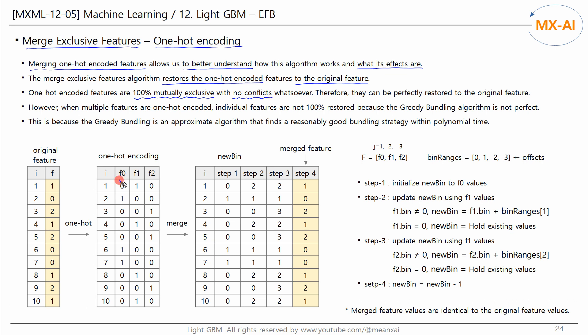There's only one non-zero value in one-hot encoding. Therefore, they can be perfectly restored to the original feature. However, when multiple features are one-hot encoded,